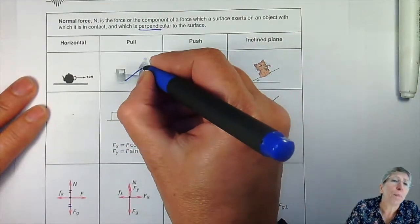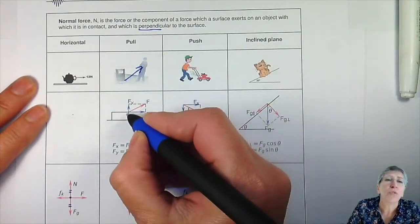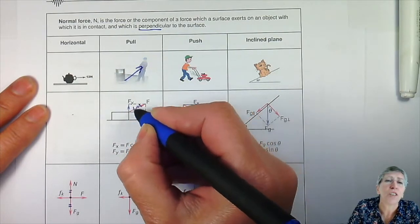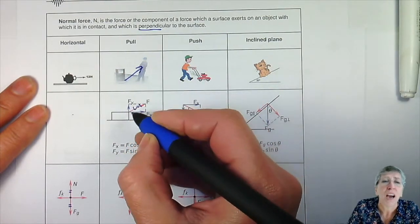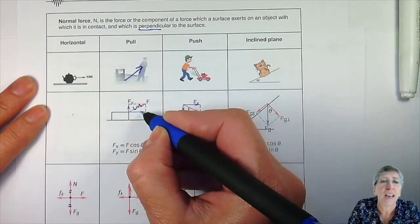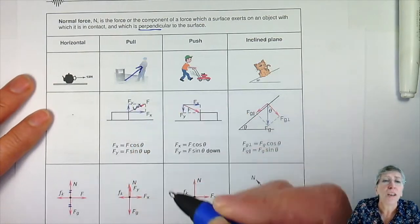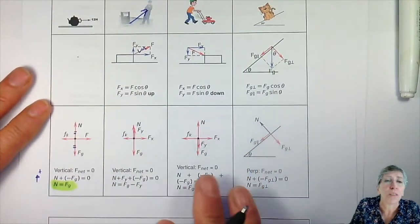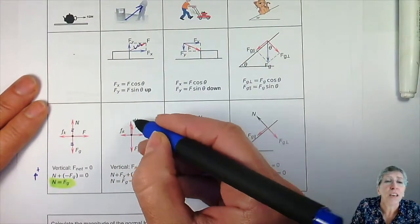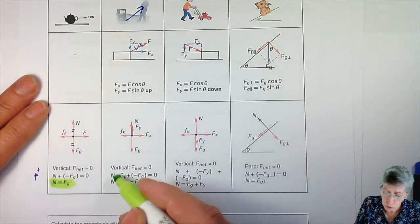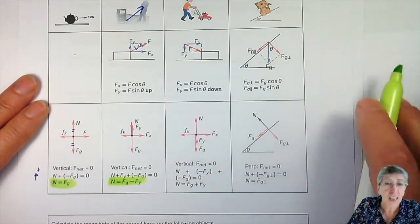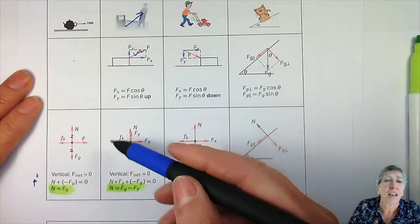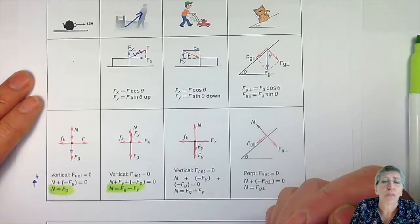If you are pulling, it means you've got an upward Y component. I'm replacing that force with a Y and an X component. And the Y component is actually helping that surface to keep you from sinking in. So when you do that, the normal force will be smaller - the normal force will be gravity minus the Y component that is helping to keep you from sinking in.